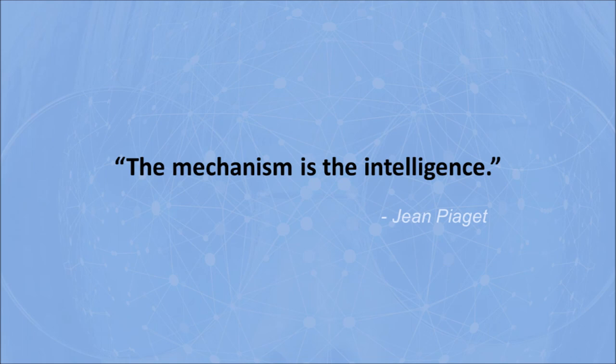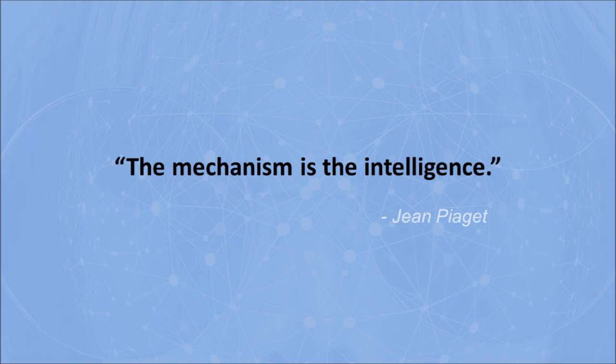So, the mechanism is the intelligence. To me, that means you need to specify exactly what you want your AGI to do, then build it. General intelligence is not magic, it's engineering. Thank you.